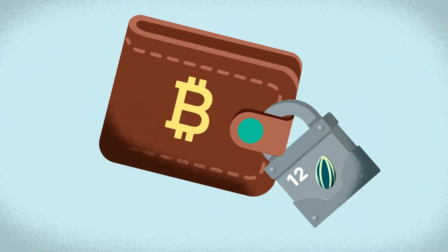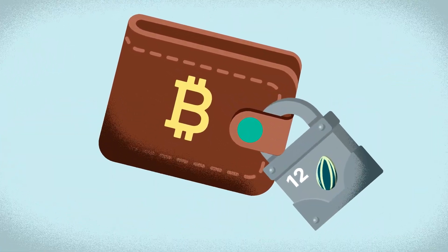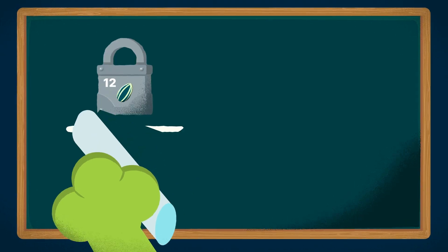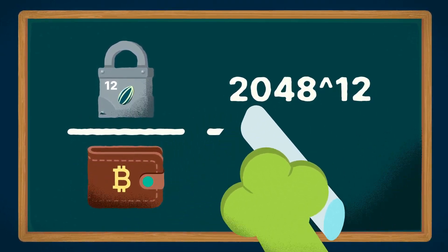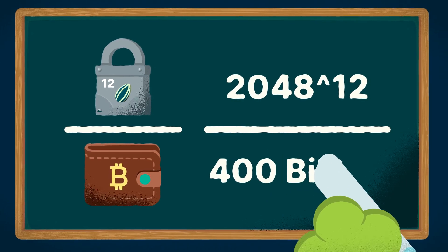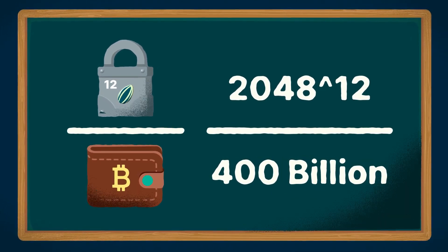Assuming that all these wallets are secured by a 12-word seed phrase, the odds of finding a funded wallet can be calculated by dividing the total number of possible 12-word seed phrase combinations with the number of funded wallets.